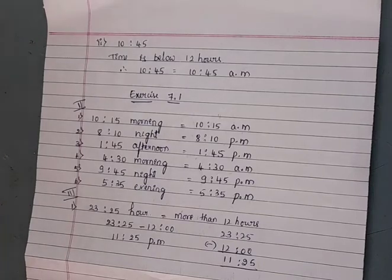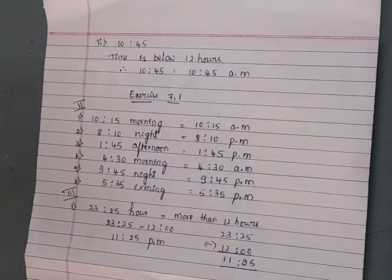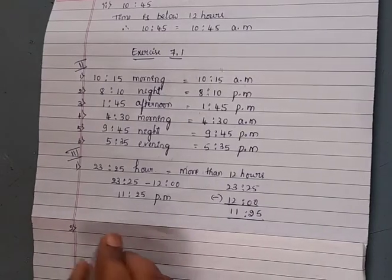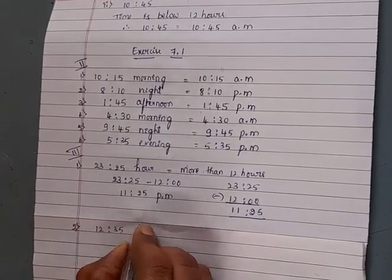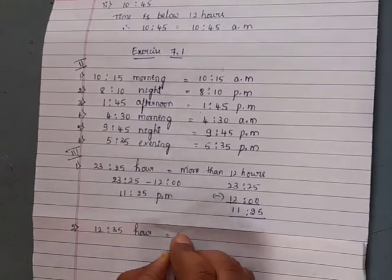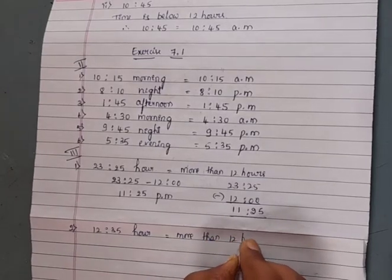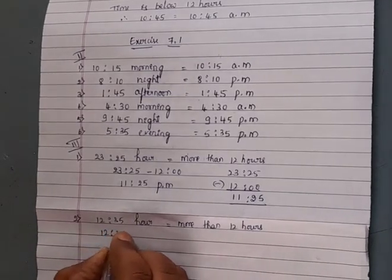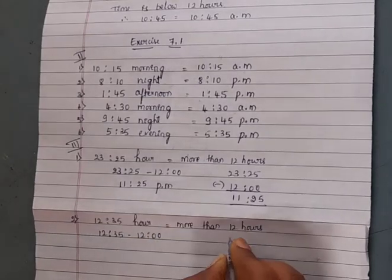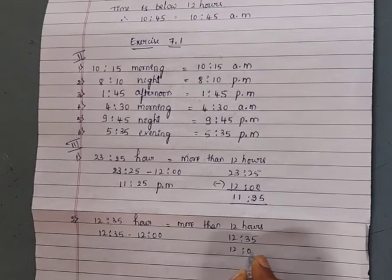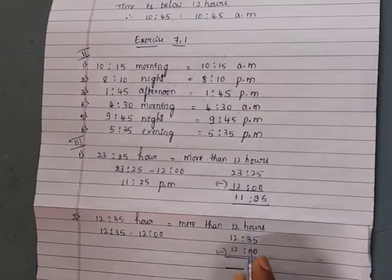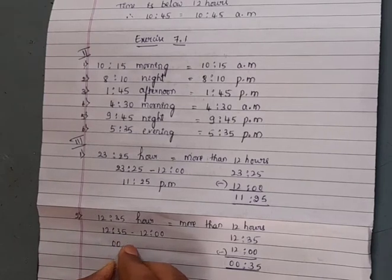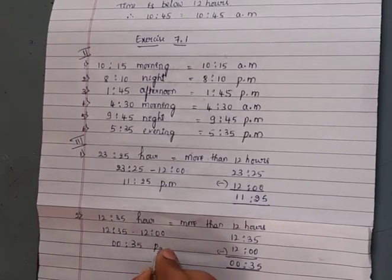When the time is above 12 hours, 12 should be subtracted from it and the remaining time is written as PM. Second problem: 12:35 hours. The time is more than 12 hours, so 12 should be subtracted. 5 minus 0 is 5, 3 minus 0 is 3, 2 minus 2 is 0, 1 minus 1 is 0. We get 0:35 PM.